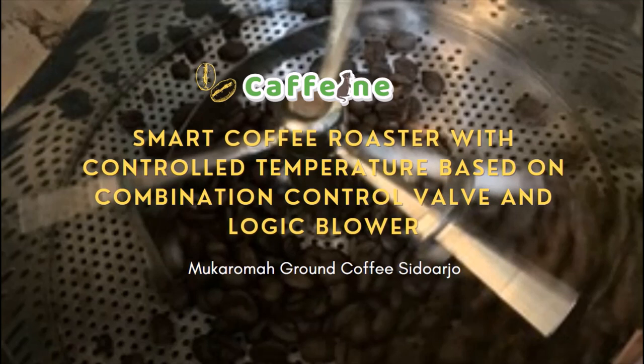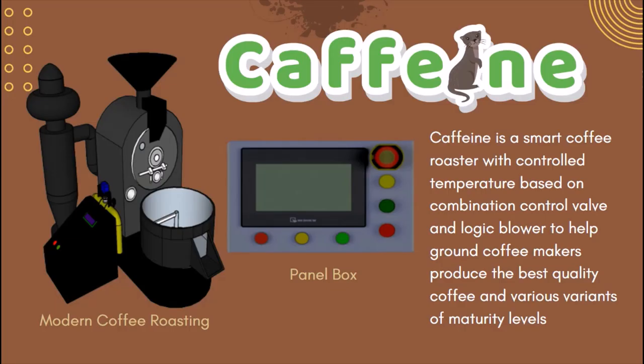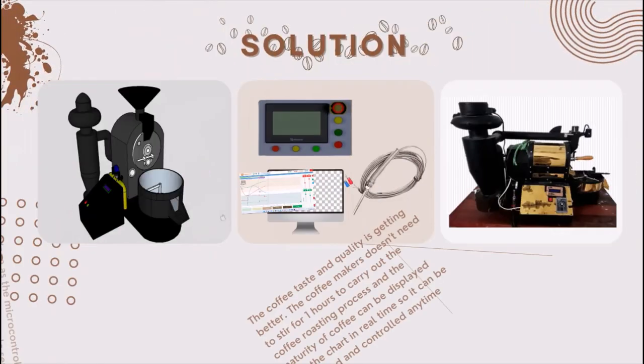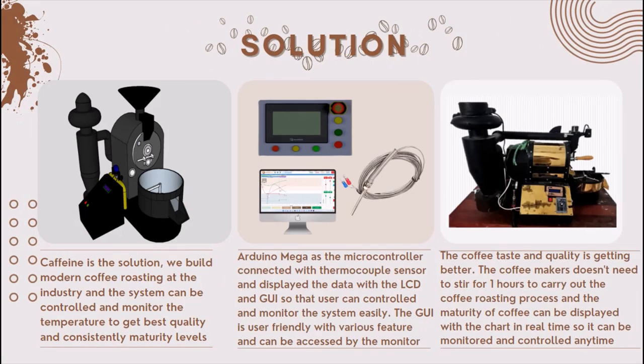We are Caffeine — a smart coffee roaster with controlled temperature based on a combination control valve and logic blower, to help current coffee makers produce the best quality coffee and various variants of maturity level. Caffeine is the solution.